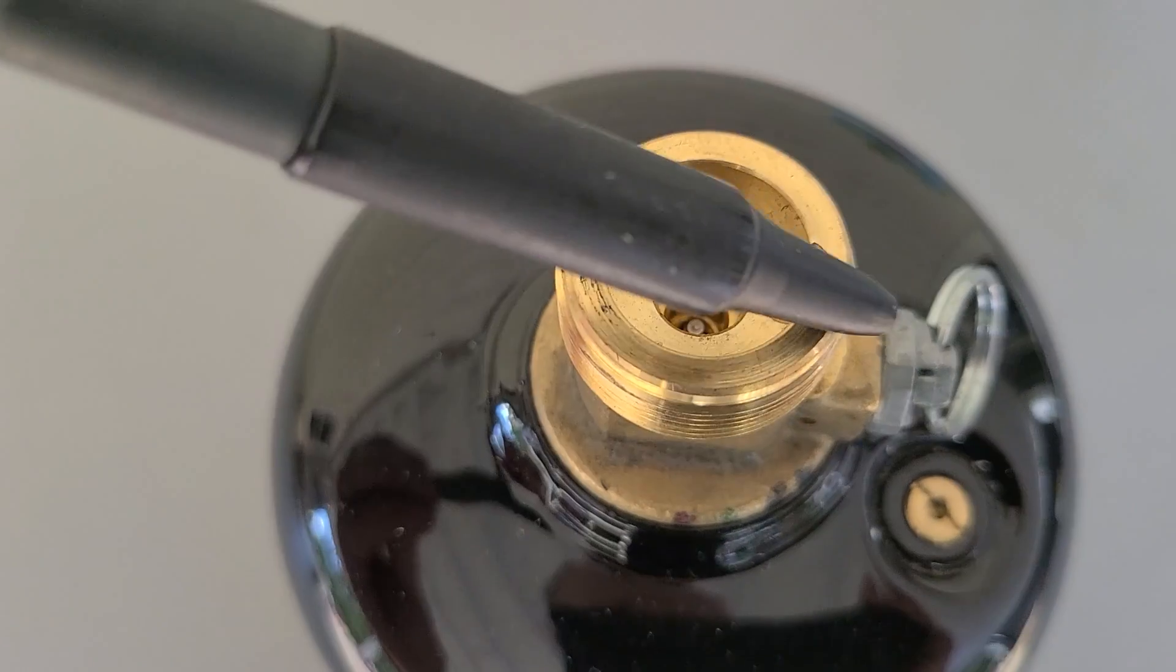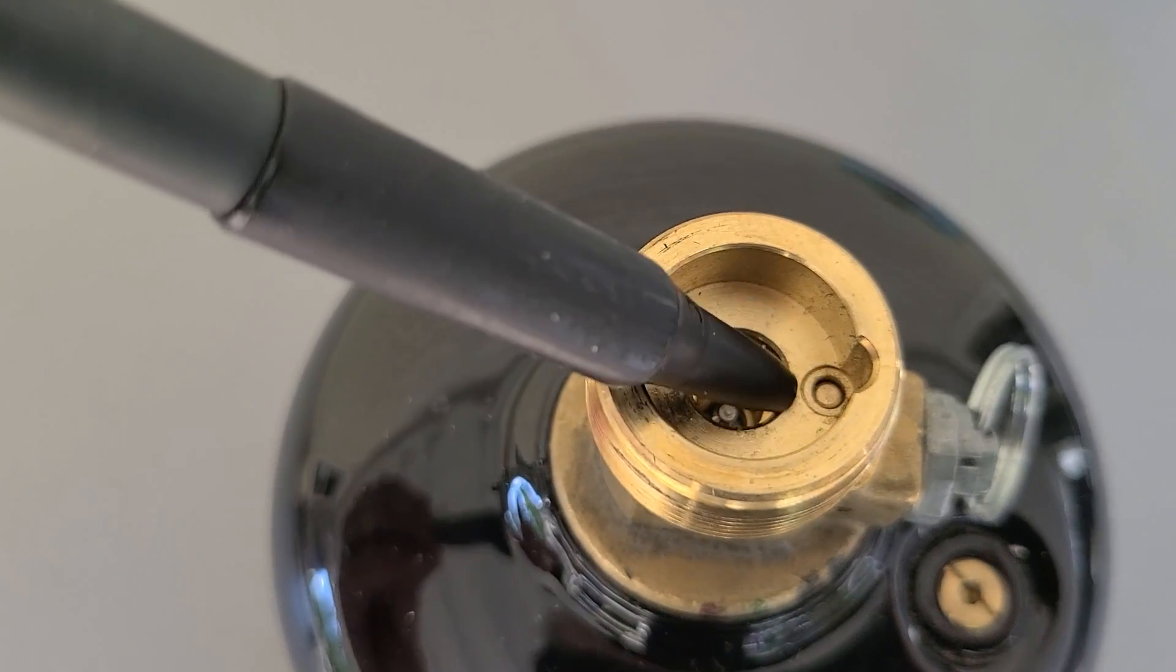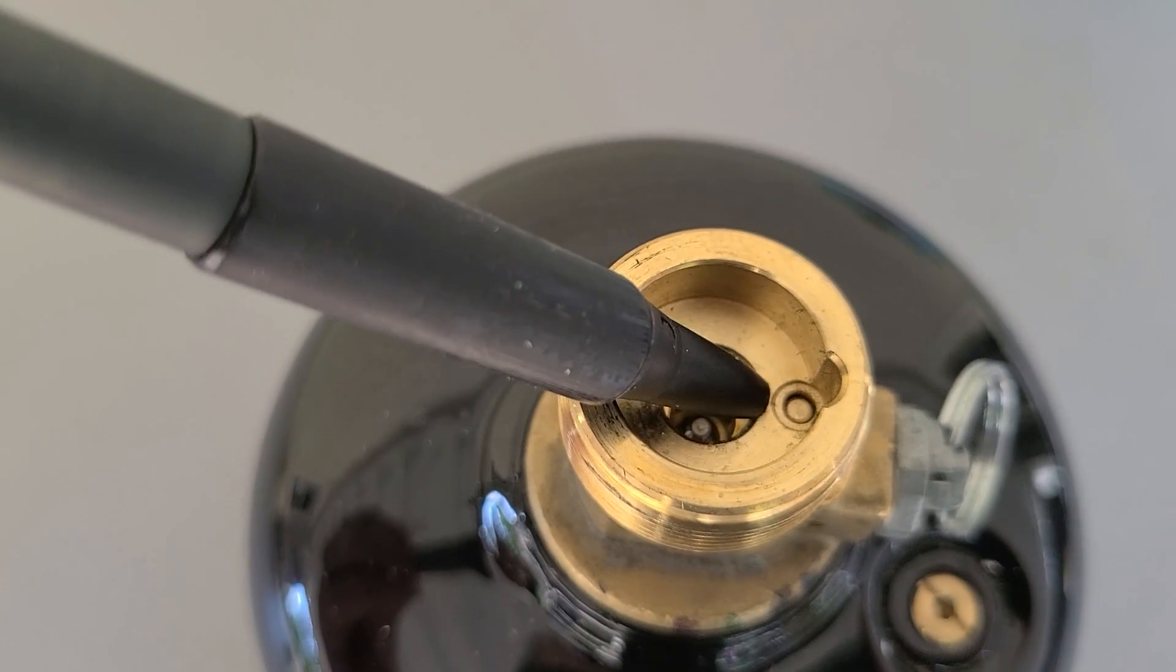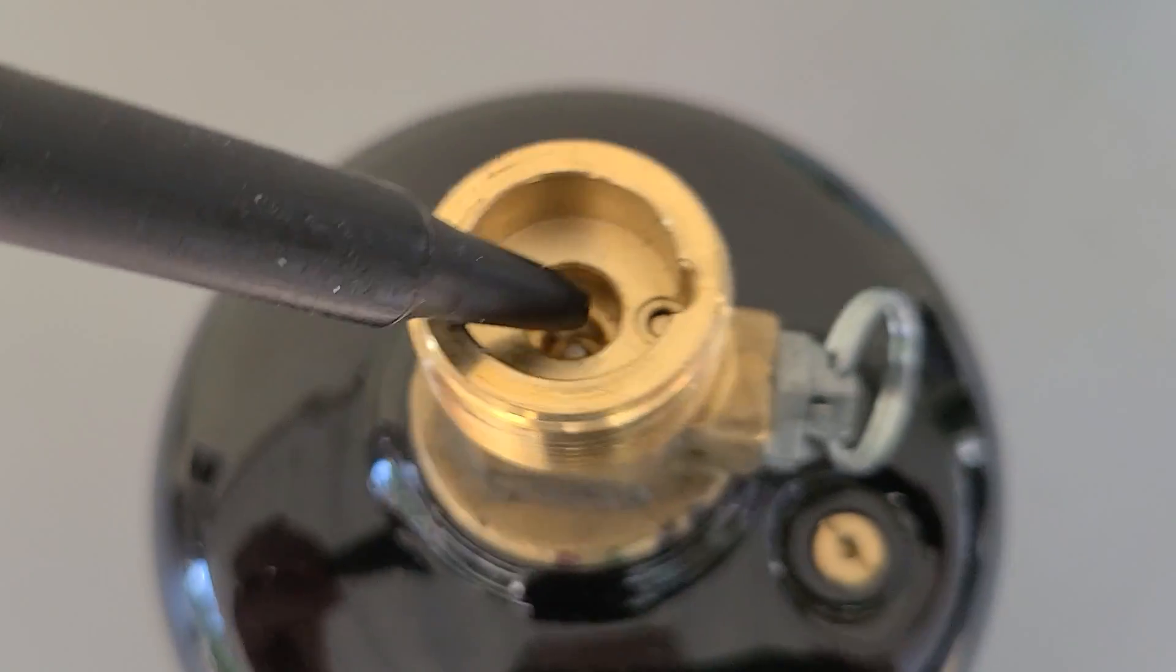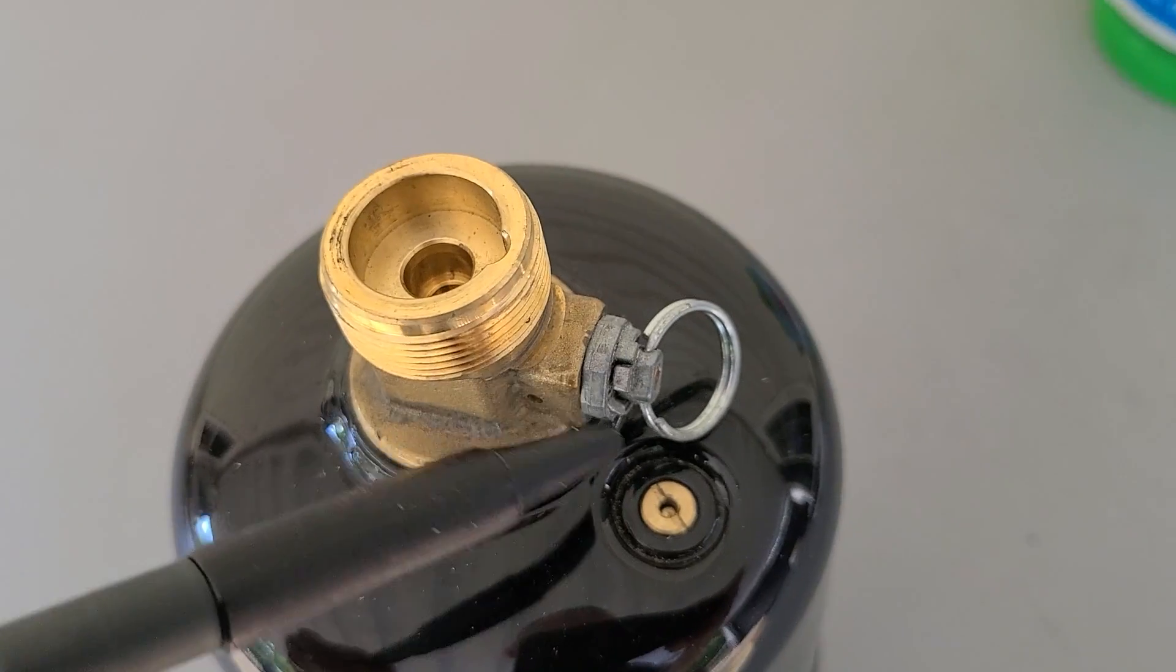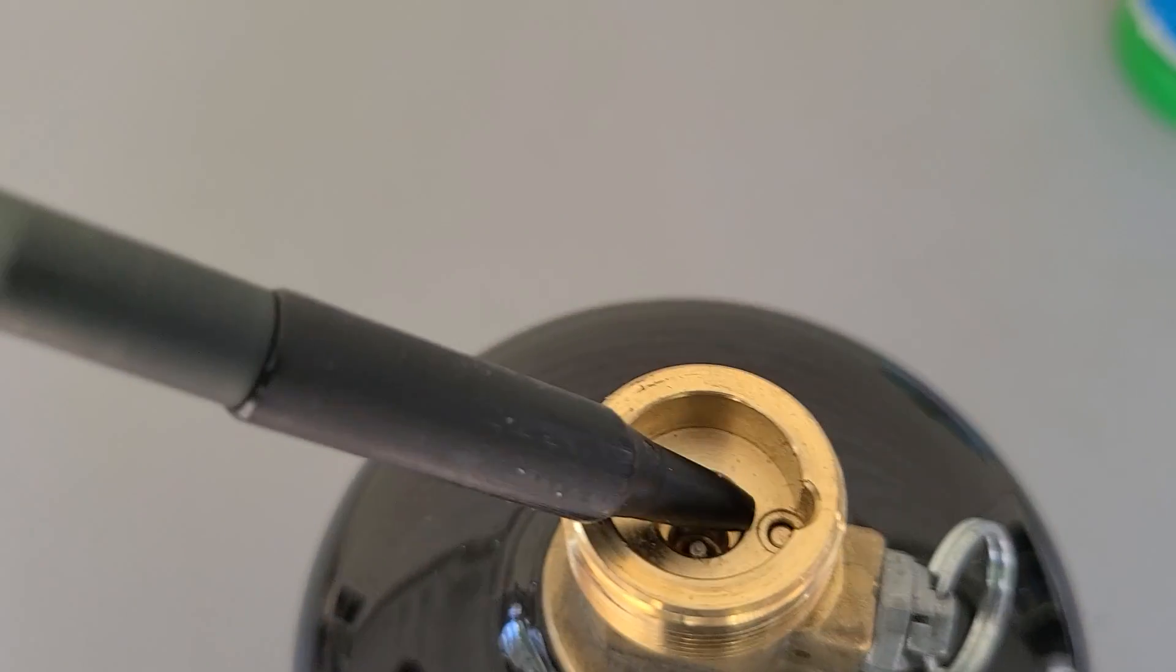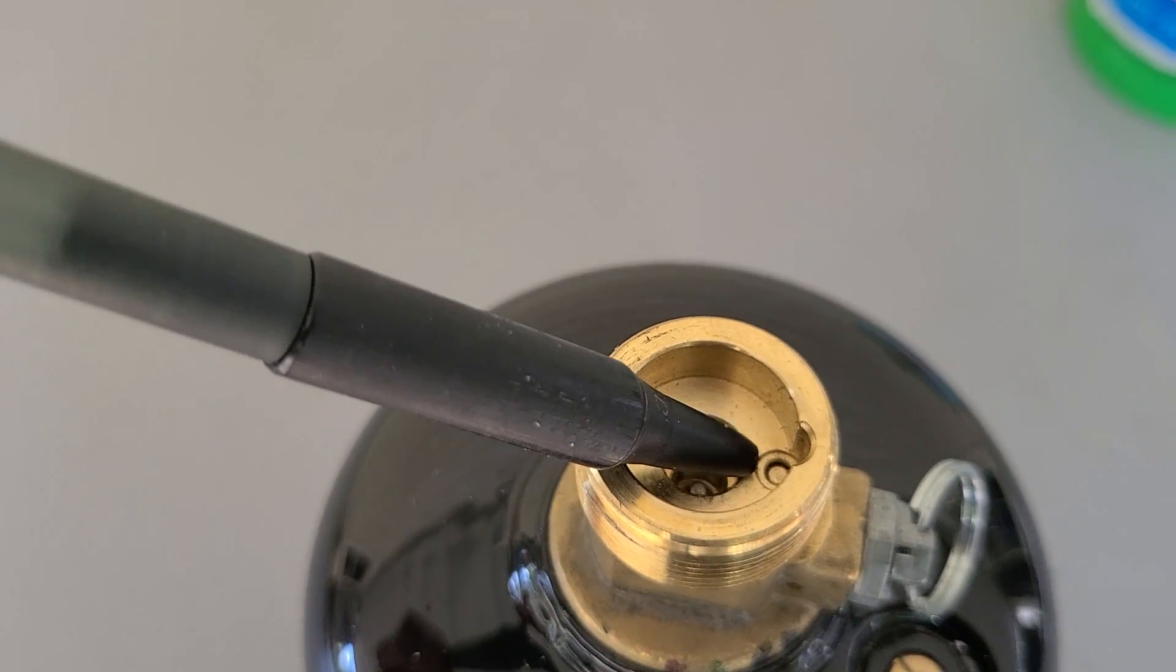You see this little groove and little pin right here that has to be depressed first. And then this purge valve will be able to be used. So if nothing is pushing down on this pin right here, then turning this isn't going to do anything.